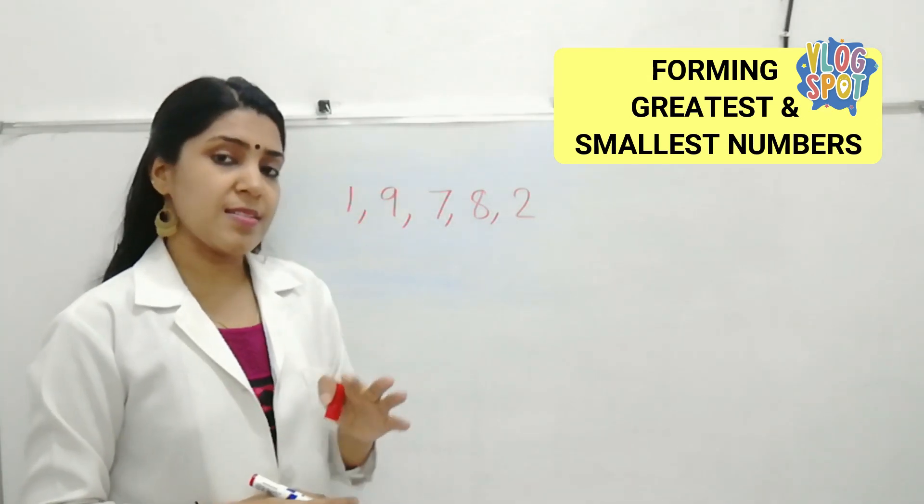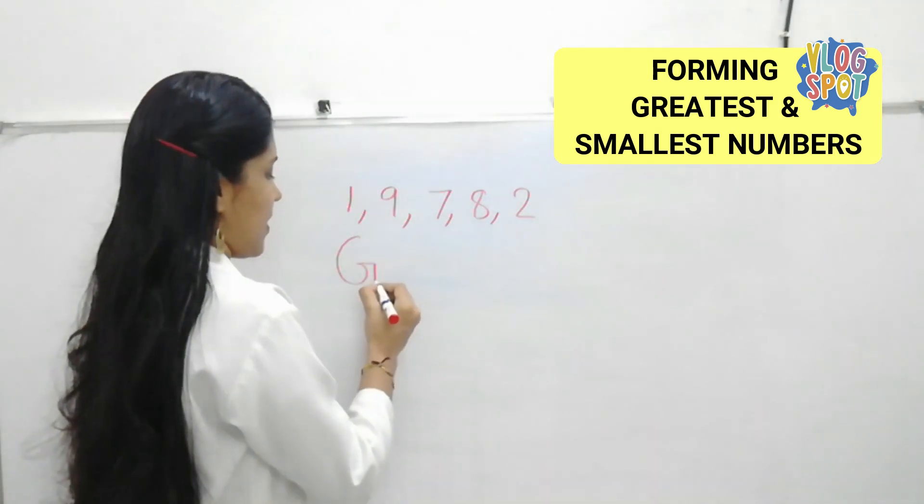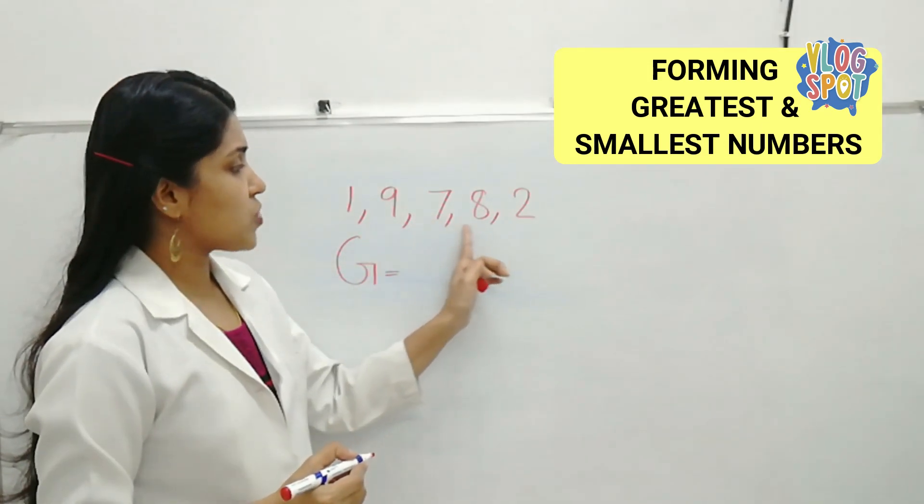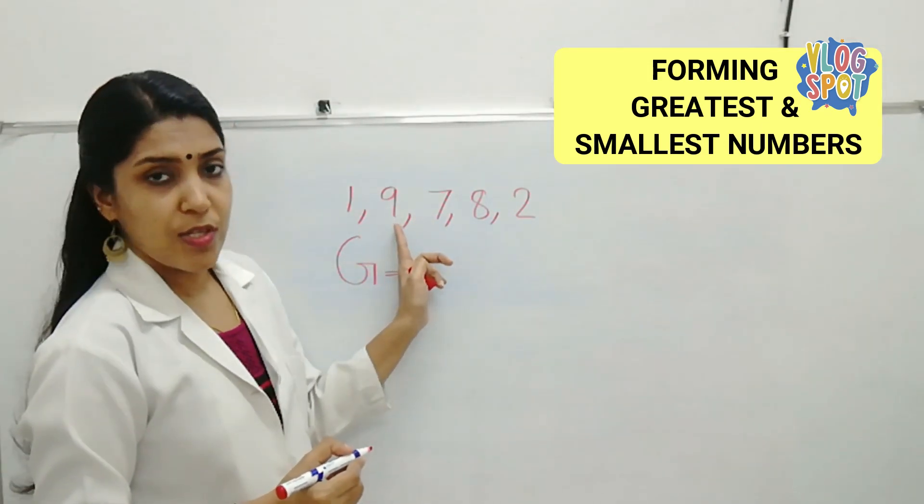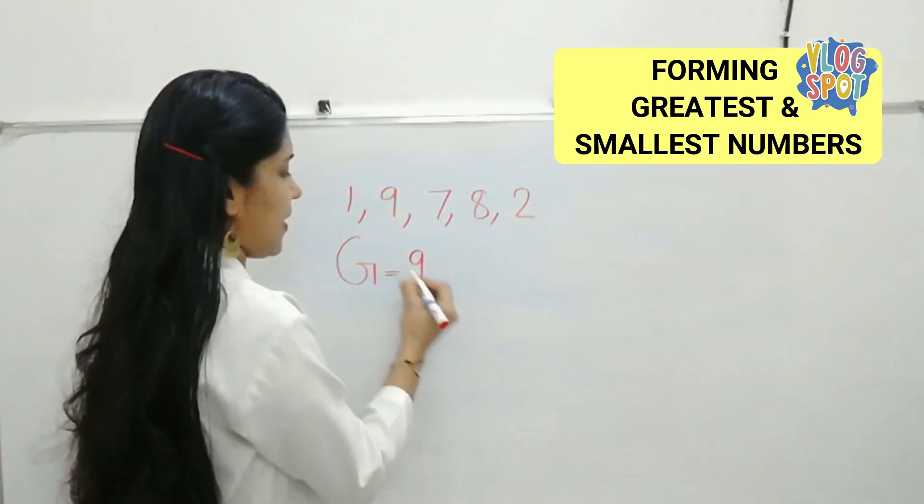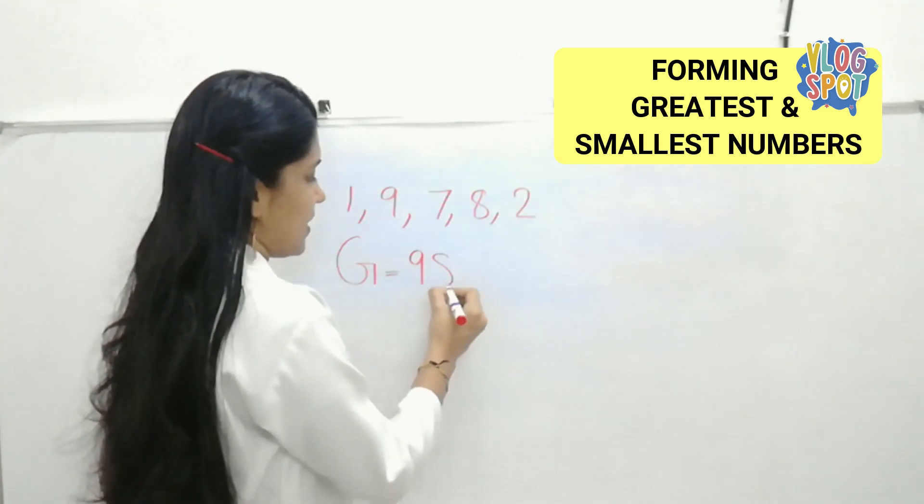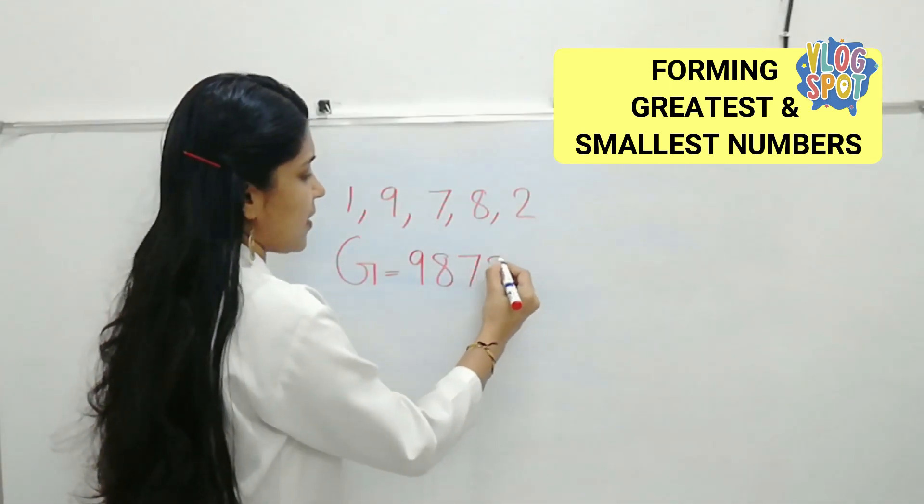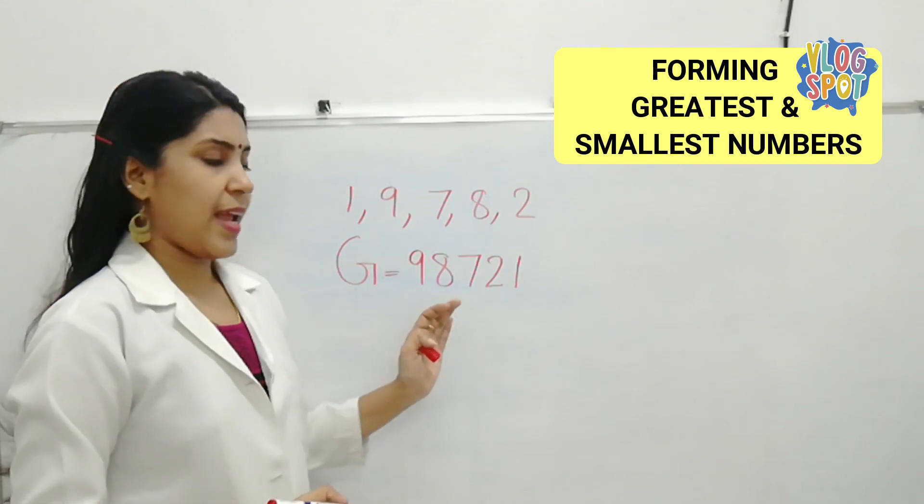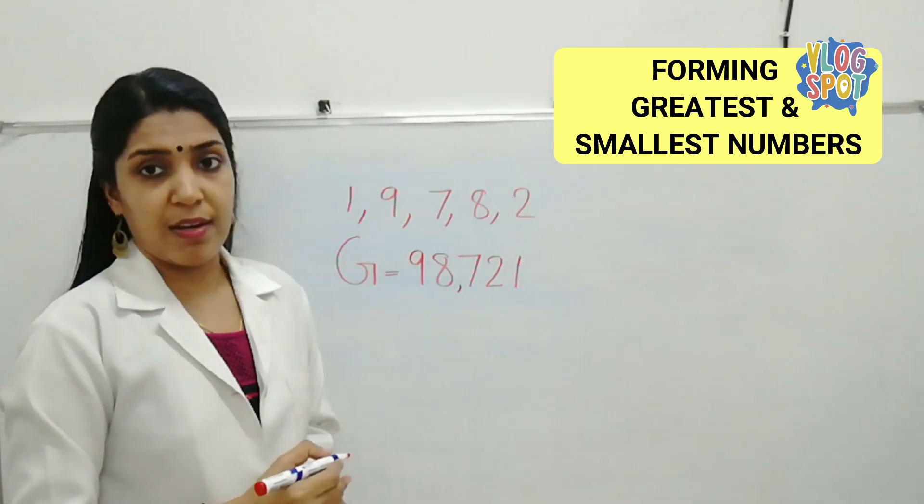We have to form the greatest number using the digits. For the greatest number, we have to take the biggest digit, which is the biggest digit here. Yes, it is 9. Then what about the second biggest? Yes, it is 8. Then come 7. Then come 2. Then 1. 9, 8, 7, 2, 1. That is 98,721.